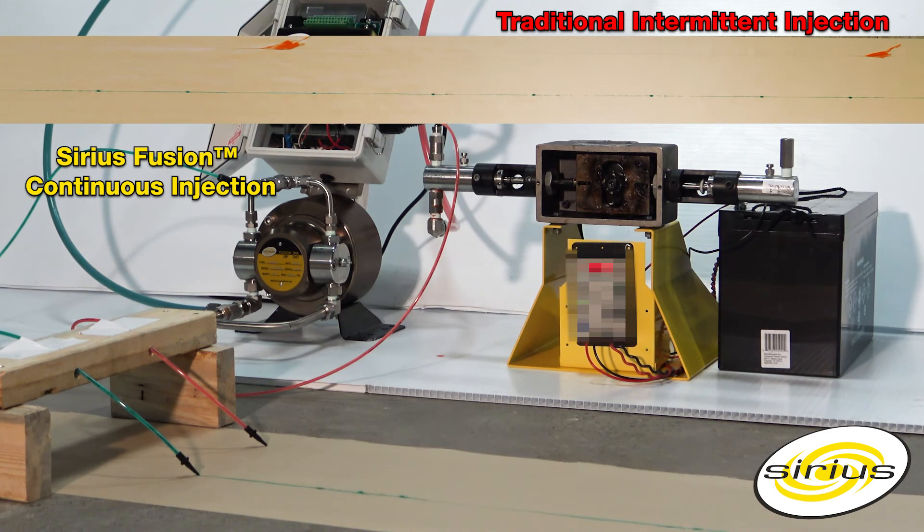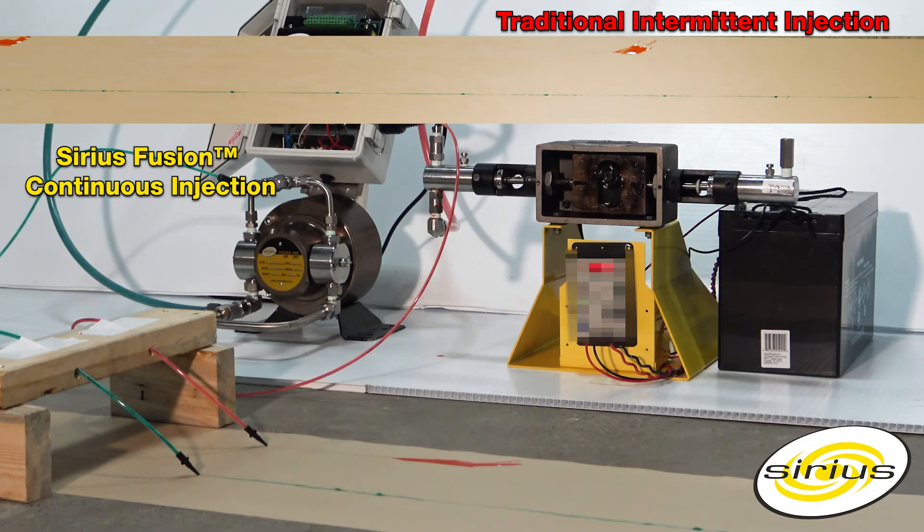This uniform and continuous flow ensures that the chemical has the best opportunity to disperse both radially and axially in the flow stream. Radially meaning across the pipe and axially meaning up and down the flow stream. Axial dispersion cannot be achieved using intermittent flow.